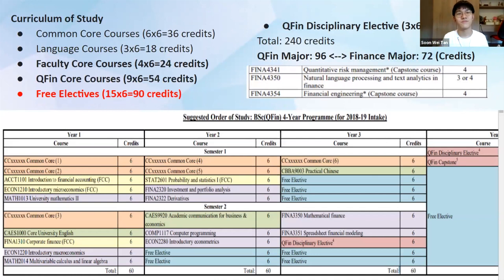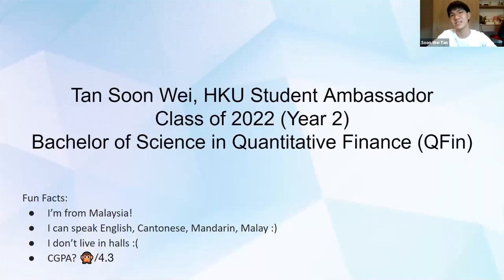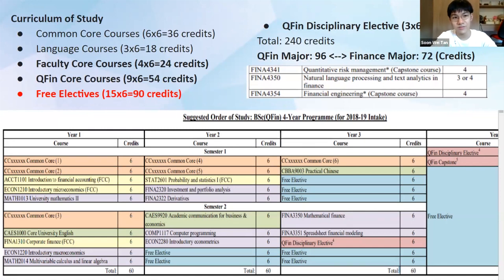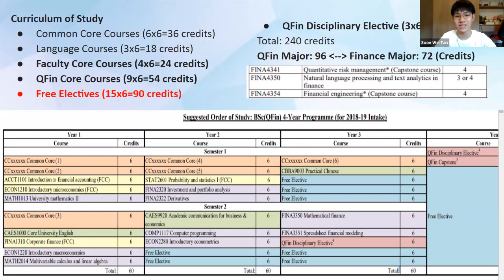For my sharing, I'll be focusing more on Quantitative Finance, which is a course that is quite unique in FBE. On this slide you can see the curriculum of study. There are some common things: number one, common core courses; number two, language courses; and number three, faculty core courses, which is in yellow. These courses will be explained by other student ambassadors later, so I won't dive into the details.